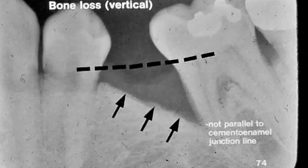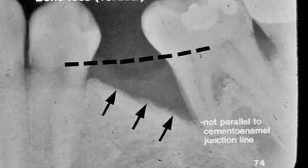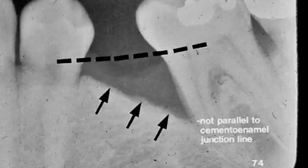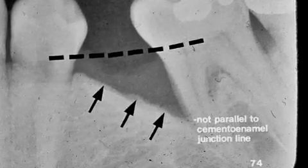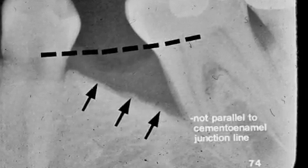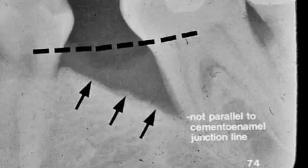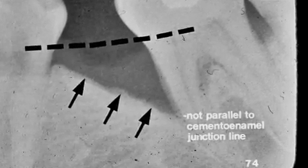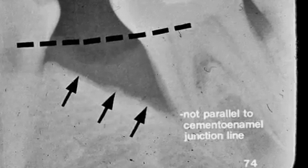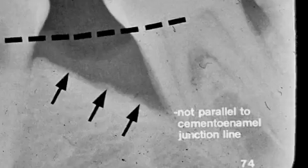The dotted line represents the benchmarked CEJ. Notice that the arrows point to the bone and it is not parallel with the benchmarked CEJ — it is at an angle. We call this vertical or angular bone loss.